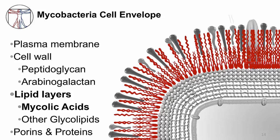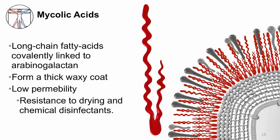The cell envelope is also composed of unique lipids, and some very important ones are called mycolic acids. These are long-chain fatty acids covalently linked to the sugar layer, arabinogalactan. As mentioned before, these lipids form a thick, waxy coat that has low permeability. The waxy coat also allows mycobacteria to resist drying and chemical disinfectants.